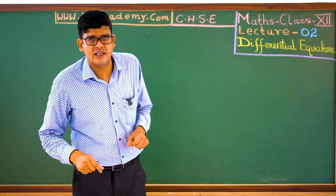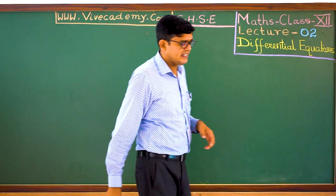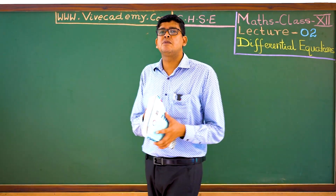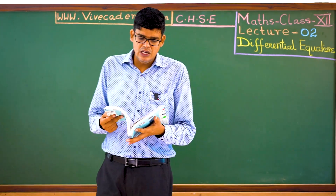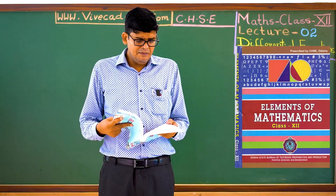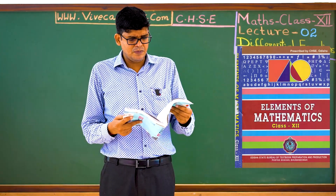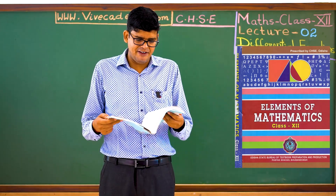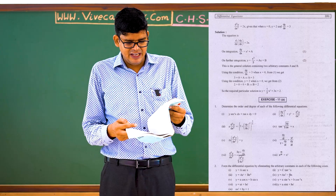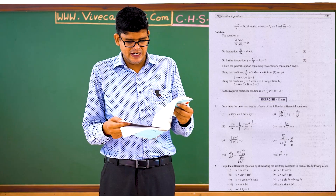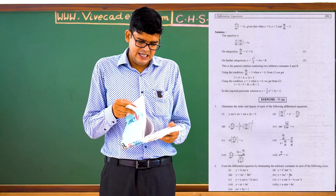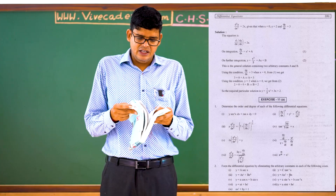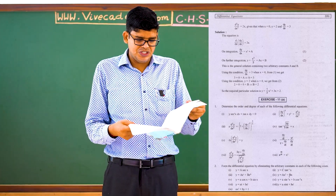Let us start. Elements of Mathematics — this is our chapter number 11. So we have section 11a, and we have order and degree, where we have questions.